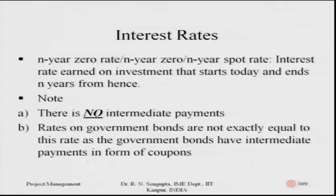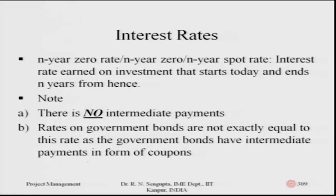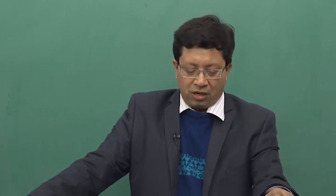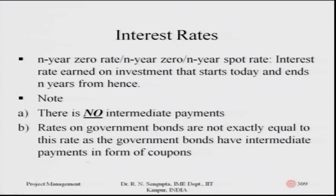We will now look at calculating the interest rate for project management — specifically the N-year zero rate, or N-year spot rate. This is the interest rate earned on an investment that starts today and matures N years from now. Note that N years need not be integers; it can be three years four months or four years fifteen days. For this concept we consider that there are no intermediate payments.